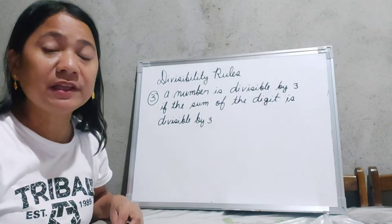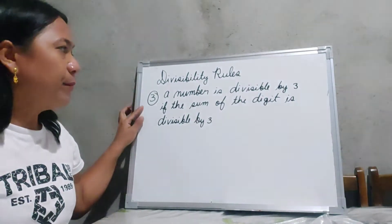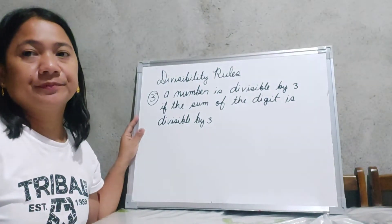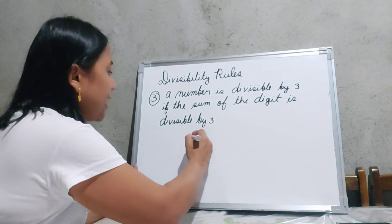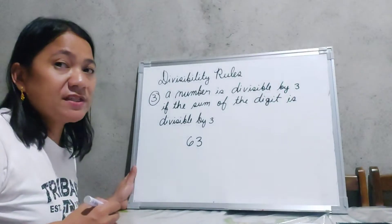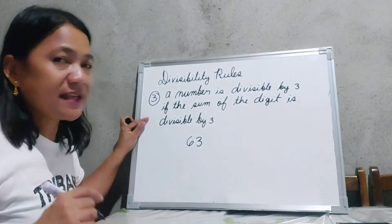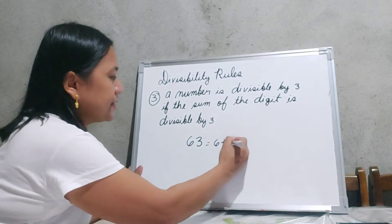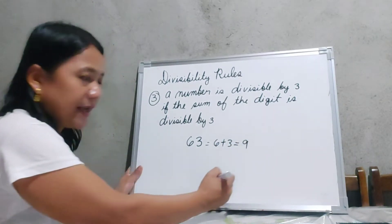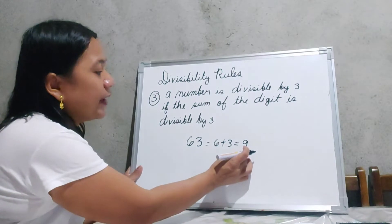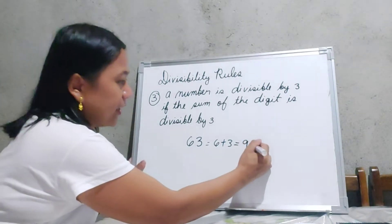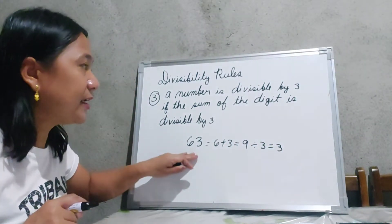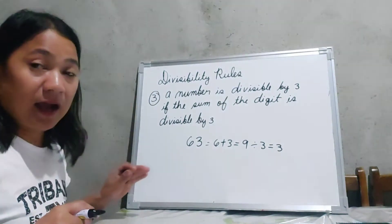This is the divisibility rule for 3. A number is divisible by 3 if the sum of its digits is divisible by 3. Let us use 63 as an example. As the rule says, we must add these 2 digits: 6 plus 3 equals 9. We then divide 9 by 3, and 9 divided by 3 is equal to 3. We can see that 63 is divisible by 3.